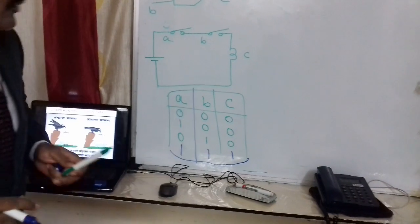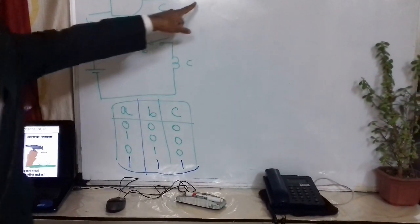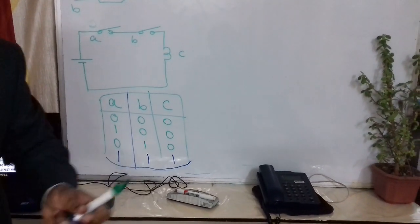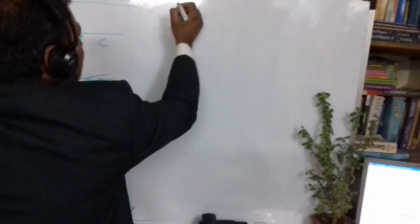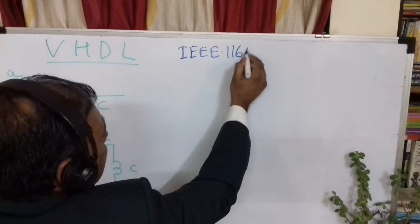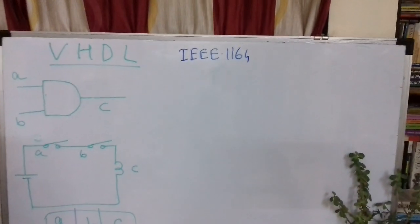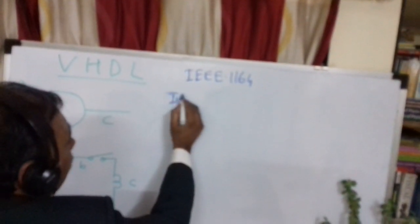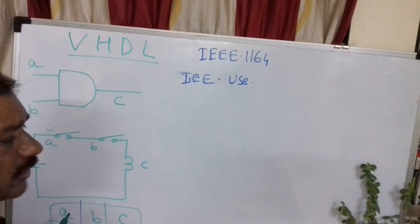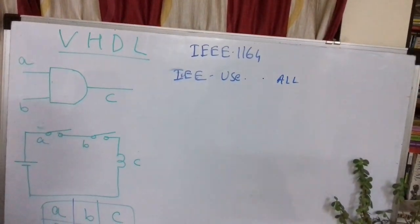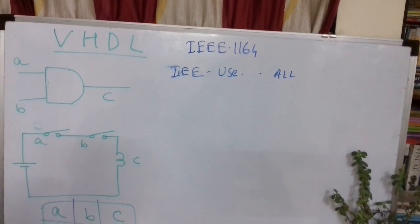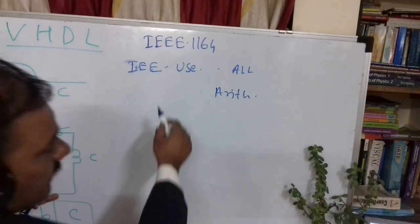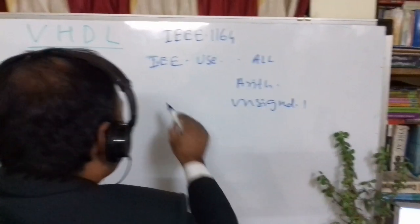To design this using the Xilinx software, you need to write a program. In Xilinx, there is a standard library defined by IEEE — IEEE standard 1164. You declare the library as IEEE, then use STD_LOGIC_1164.all, arithmetic.all, arith.all, and STD_LOGIC_UNSIGNED.all. This is the library declaration, which is the first step.